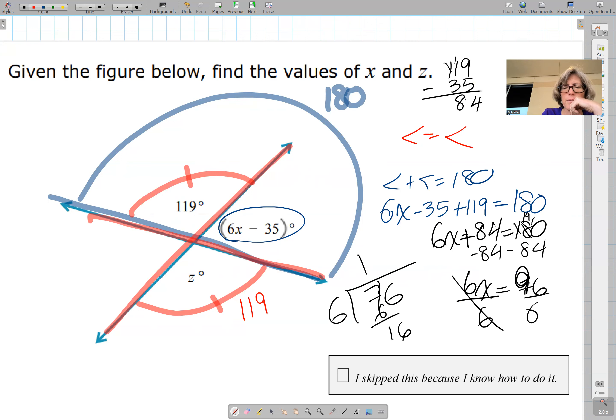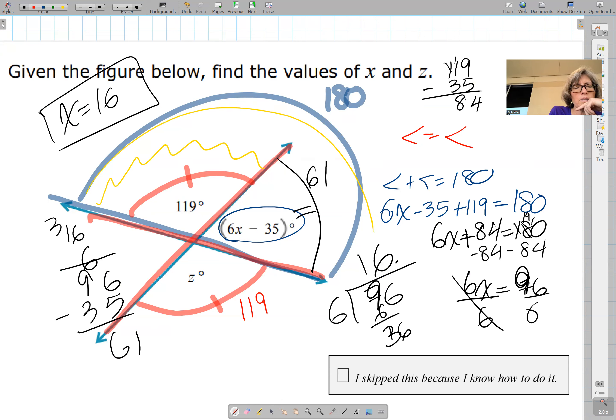So we found x equals 16. You're not done because you want to solve for this. And another way you could have figured this out is just take 119 away from 180, and you're going to get 61 there. So 6 times 16 is 96 minus 35, that's 61, check. That's 61, this is also 61.